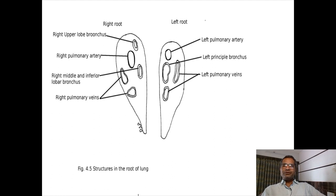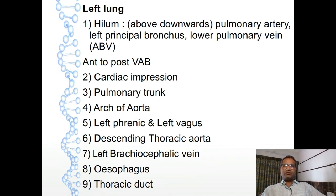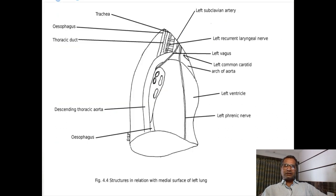Remaining relations of left lung: cardiac impression is deep and prominent in left lung, and this impression comes in relation with left ventricle, part of right ventricle, and right auricle. In relation with the upper part there is an impression for pulmonary trunk, above this cardiac impression. In the posterior aspect, above is the arch of aorta which continues as descending thoracic aorta - it is a continuous depression for arch of aorta and descending thoracic aorta. Left phrenic nerve and left vagus nerve, where crossing of these two nerves takes place just above the aorta, also comes in relation with this surface.